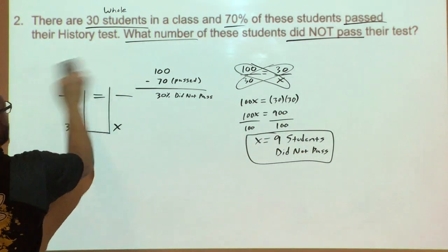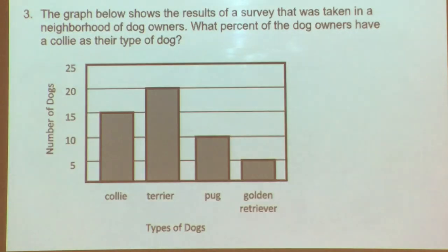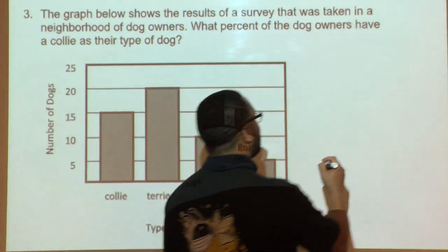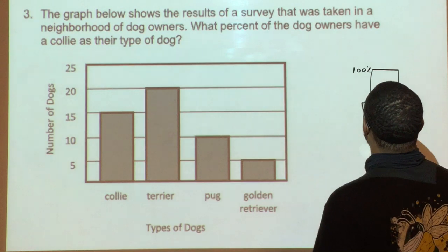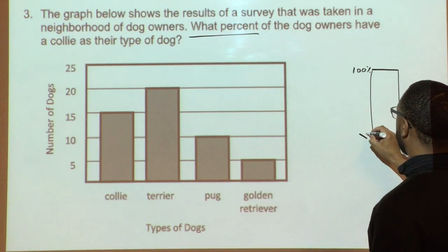We'll do one more. Looking at this last example: the graph shows the results of a survey taken in a neighborhood of dog owners. What percent of the dog owners have a collie as their type of dog? I'm hoping you're already thinking about where X is going to go — the question is pretty telling. We'll set up our percent bar with 100% at the top, and since the question asks 'what percent,' X goes on the percent side.